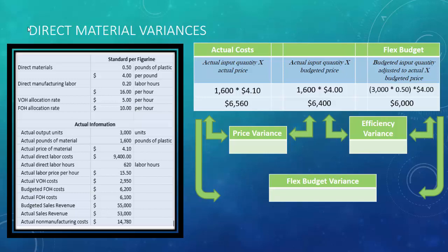The price variance and efficiency variance are just the differences between columns. Our price variance is $160 unfavorable because $6,560 is $160 more than the no-name column of $6,400. The efficiency variance is $400 unfavorable because the no-name column is $400 more than our flex budget. Read right to left — higher numbers are unfavorable since these are all costs. The flex budget variance is $560 unfavorable: we spent $6,560 versus the $6,000 flex budget.